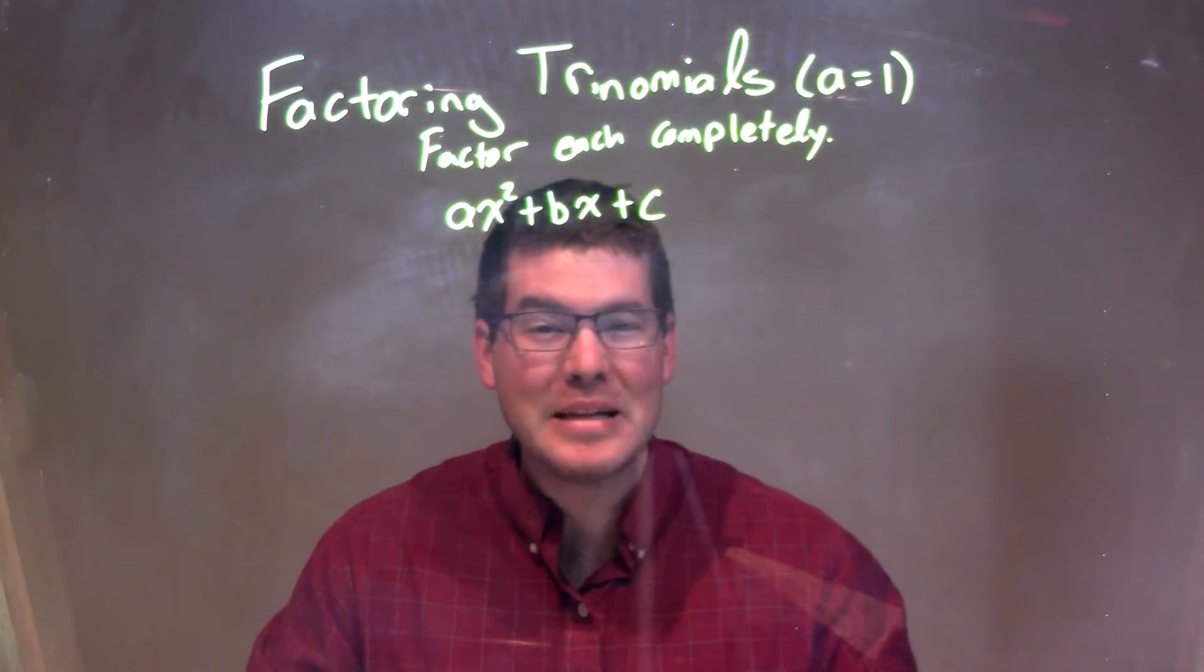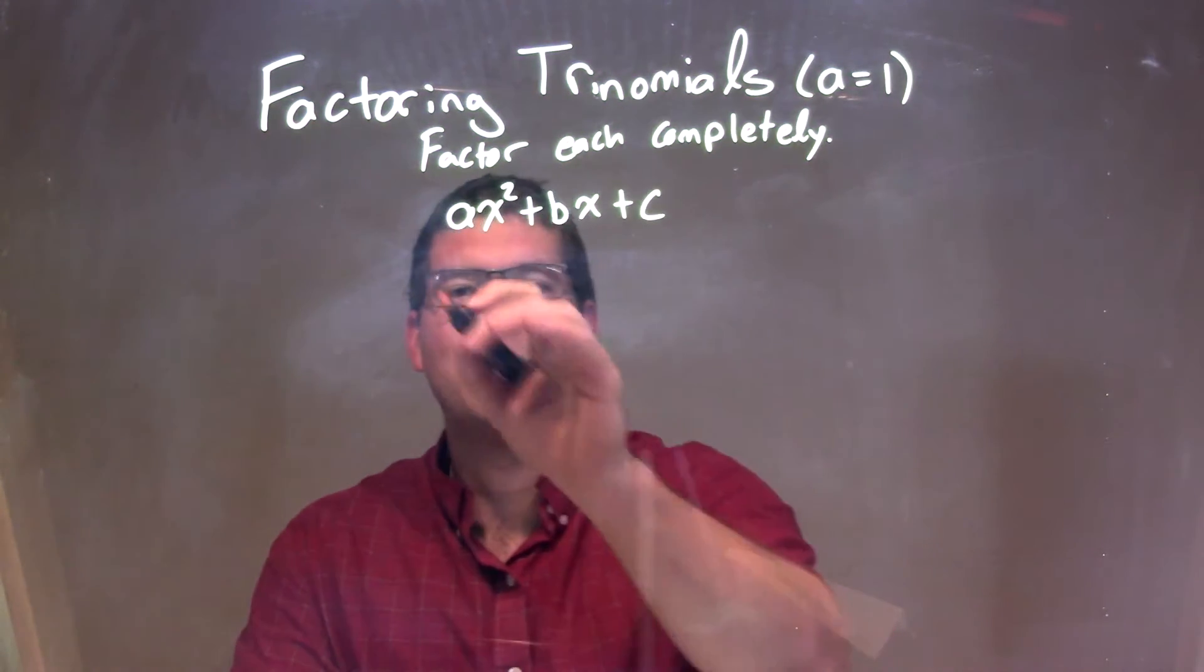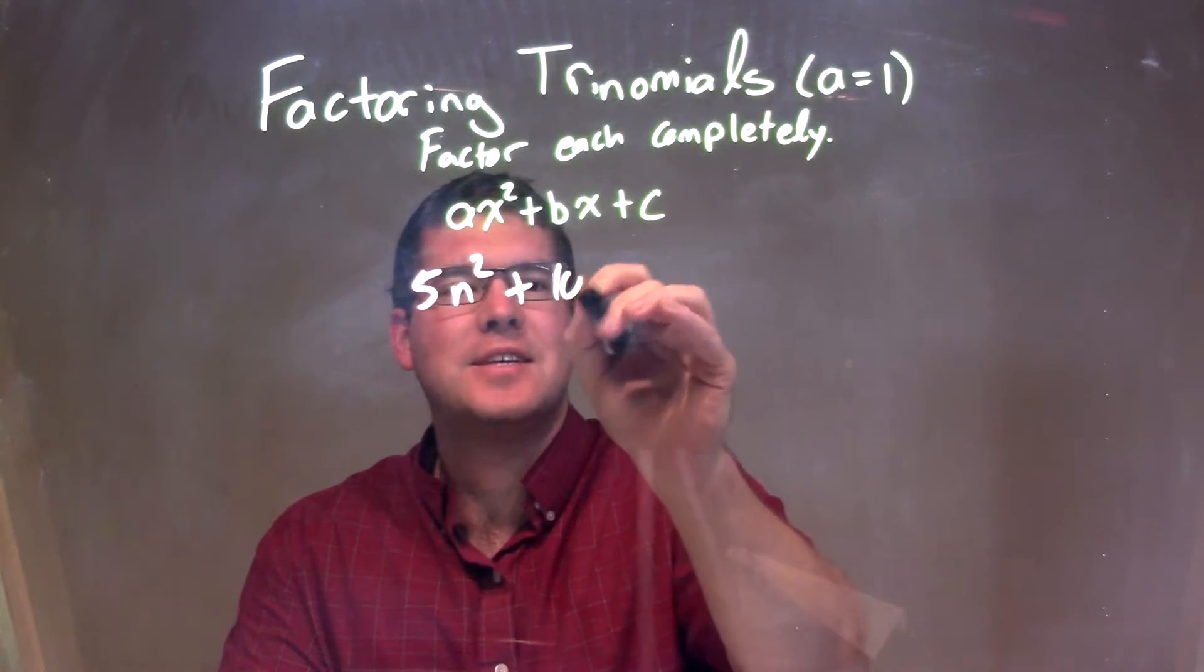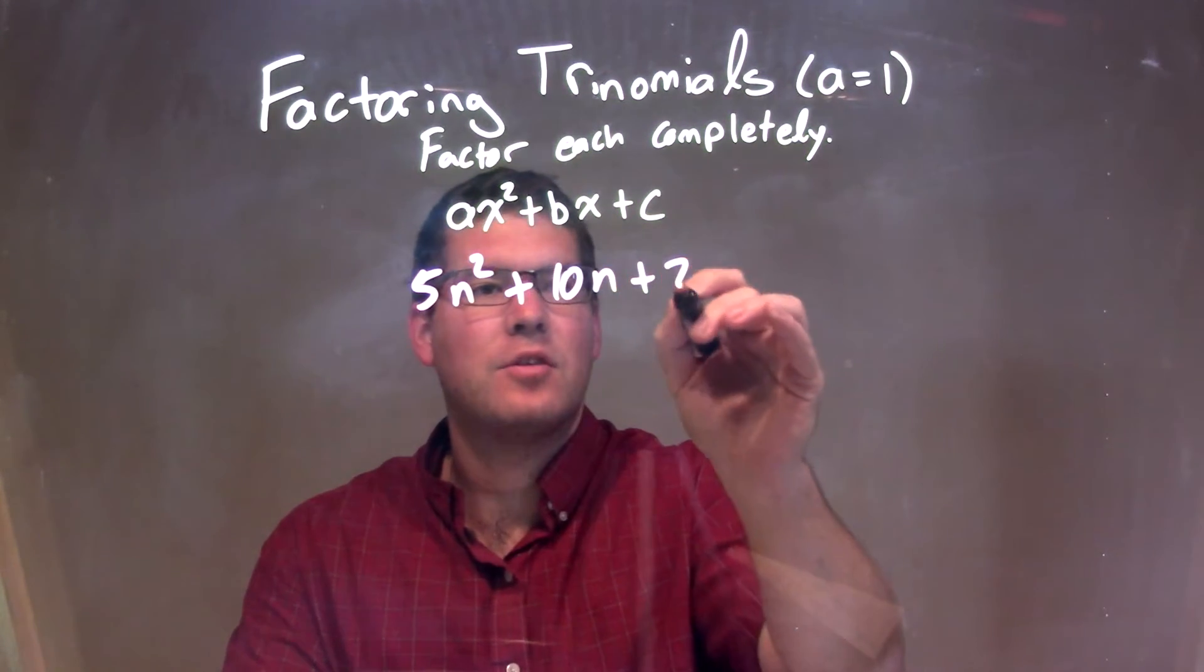We're going to factor each one completely. So if I was given this trinomial: 5n² + 10n + 20.